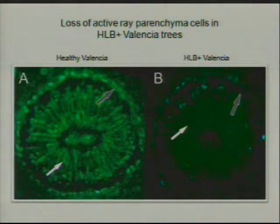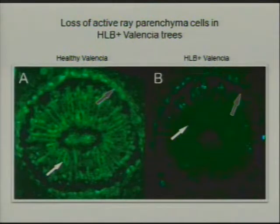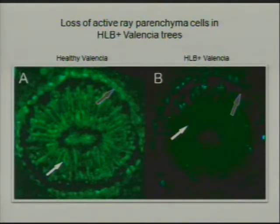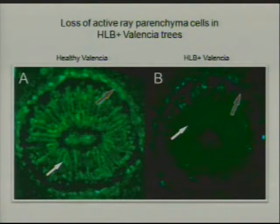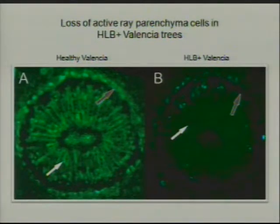In the HLB-infected petiole we don't see any of that activity at all — just some autofluorescence that would happen naturally. We don't see that bright living tissue within the xylem. It's my opinion that this is one of the things causing HLB-infected trees to be more susceptible to drought, which drives home the message that we need to make sure these trees are well watered, especially those with advanced symptoms, to help mitigate the disease.